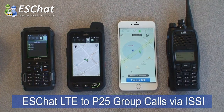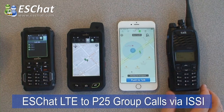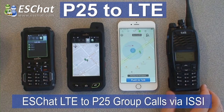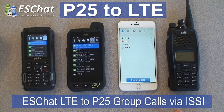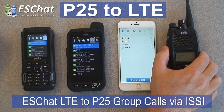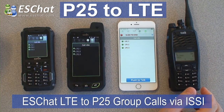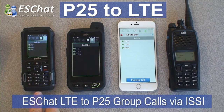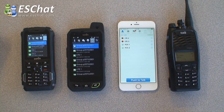Initiating group calls from the radio side is as you would expect it. On a trunked P25 system, the rotary dial selects the talk group you're looking to call. With the rotary dial set to 2001, we can initiate a new call from the radio side by just holding the push to talk button, and now we've reestablished our group call from the radio side. That's a demonstration of some of the capability when interfacing LTE ESChat to P25 via ISSI. If you have any questions, please call us or check our website at www.eschat.com.